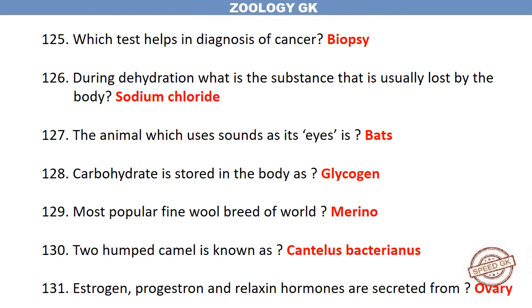Which test helps in the diagnosis of cancer? Biopsy. During dehydration, the substance usually lost by the body is sodium chloride. The animal which uses sound as its eyes is bats. Carbohydrate is stored in the body as glycogen. The most popular fine wool breed in the world is Merino. A two-humped camel is known as Camelus bactrianus.